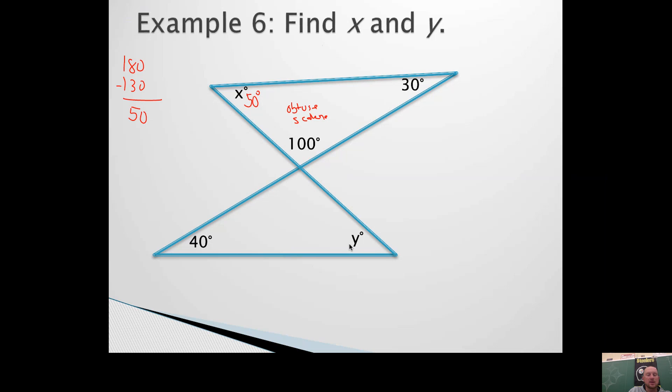Now we still need to figure out what this angle is. Remember your vertical angles. So this angle is 100 degrees. If that's 100 and that's 40, that's 140 degrees. What's left over for the other angle? It would be a 40 degree angle as well.